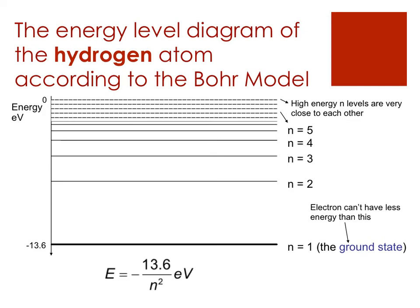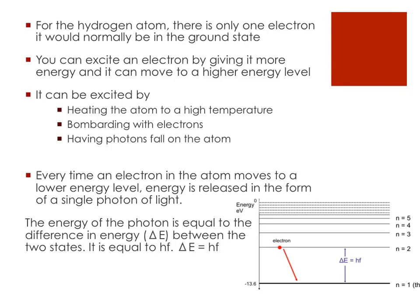So if I give an electron energy it can become excited and move up a level. To which level will depend on the energy it's been given. So how could I do that? Well, I've just said that we could have it in the high voltage discharge tube, so we could be exciting it with high temperatures. That would be the discharge tube bombarding with electrons or photoelectric effect having photons land on the atom.